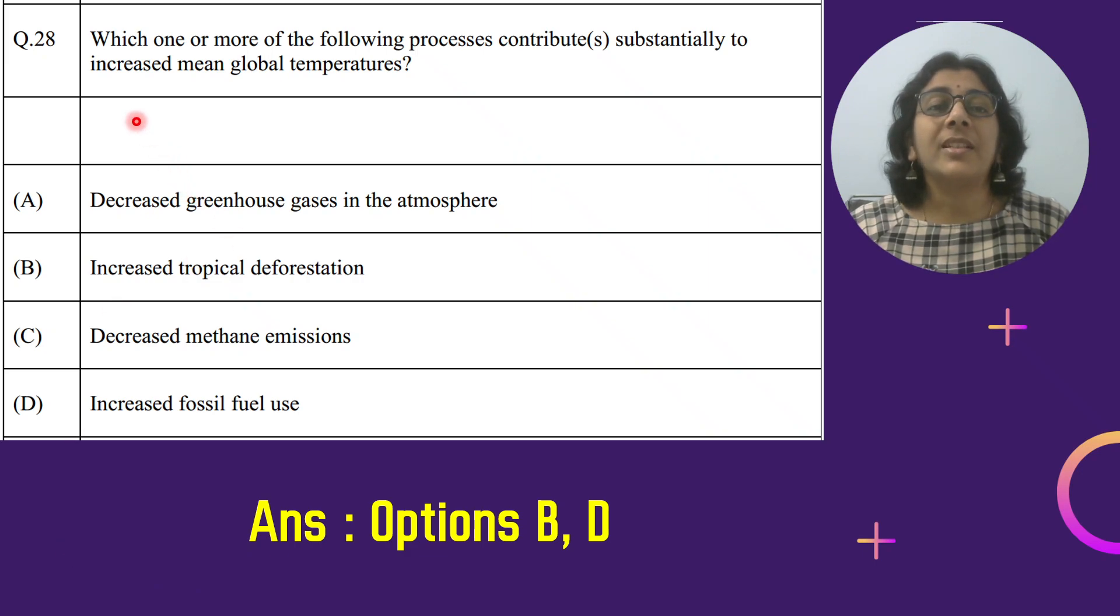So the question is which one or more of the following processes contributes substantially to increased mean global temperature? Global warming ke baare mein question hai. Options mein hain: decreased greenhouse gases in the atmosphere, increased tropical deforestation, decreased methane emission, ya phir increased fossil fuel use.